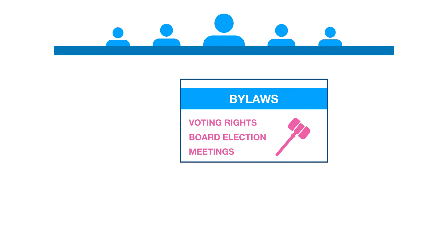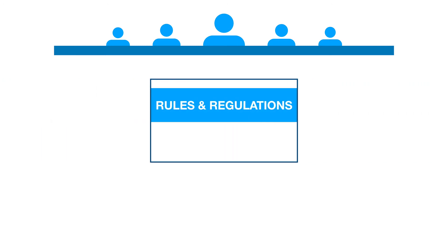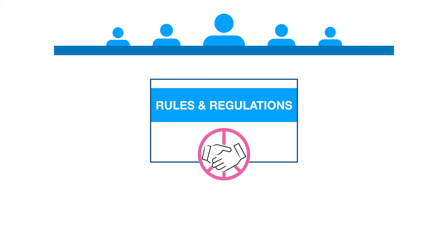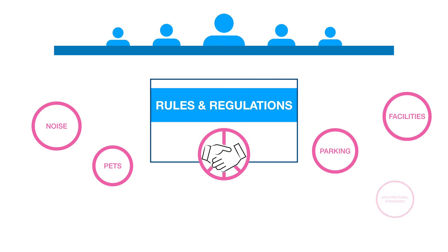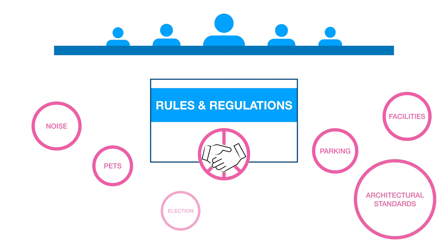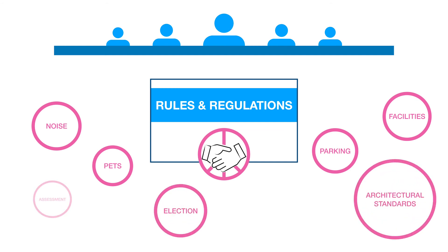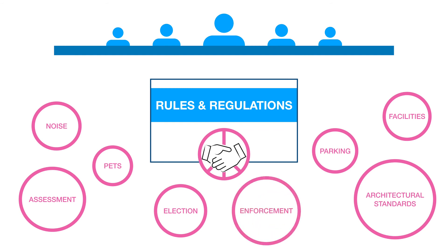Next are rules and regulations, which are adopted by boards to promote peaceful relations between residents. They address day-to-day issues such as pets, parking, nuisance noise, and the use of recreational facilities. Other rules include architectural standards, election rules, assessment collection policies, and enforcement policies.